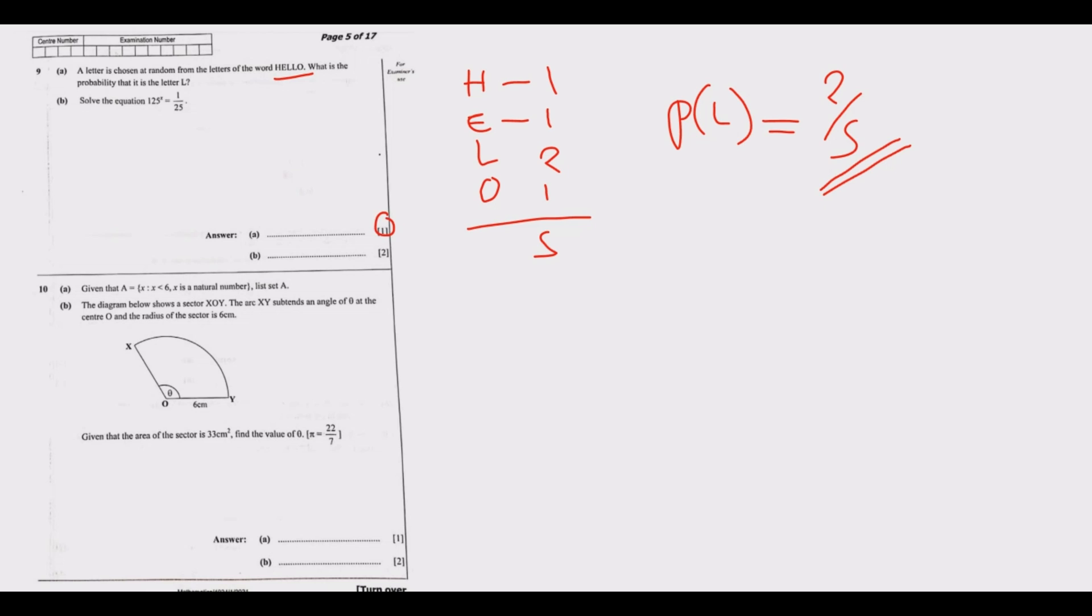Question 9b: So we have 125^x is equal to 1/25. This is again on indices. So what we need to think about when we're given an equation on indices, the first thing is ensuring that the two sides, the right side and the left hand side, they have the same bases.